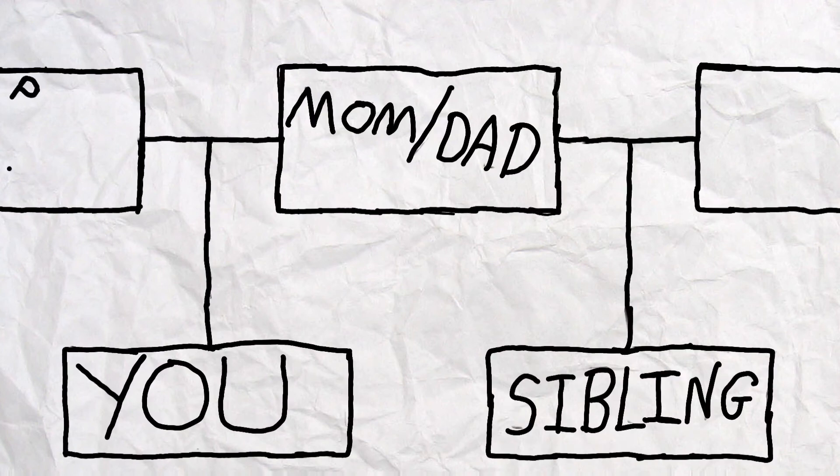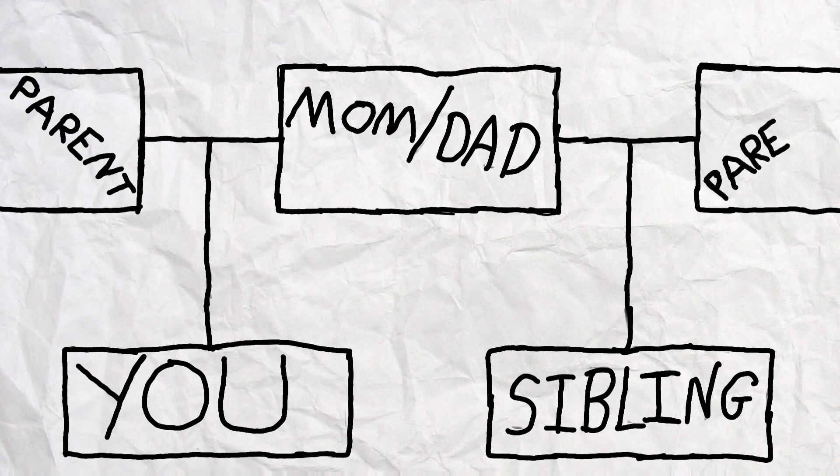A half-sibling is someone that you are related to through only one of your parents. Whether you share a mother or you share a father, you can only share one to be half-siblings.